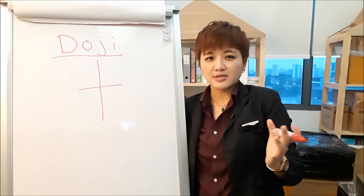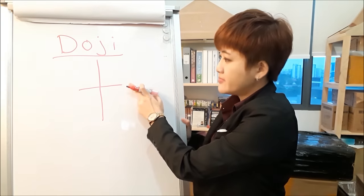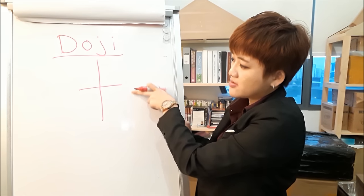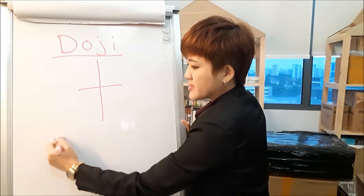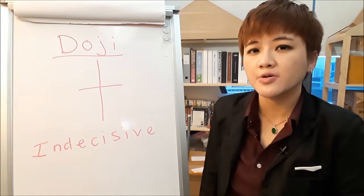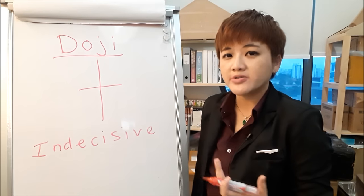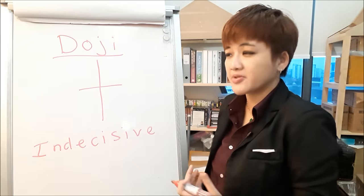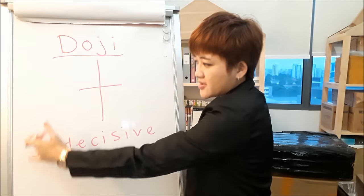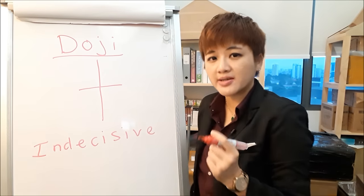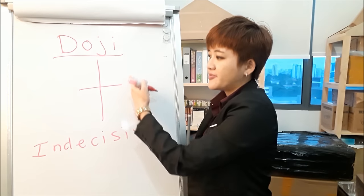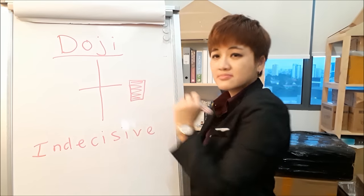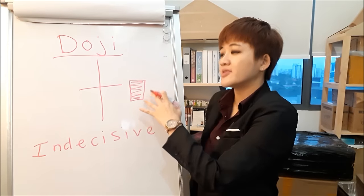The first single candlestick pattern is the doji. Price opens, goes all the way up, then all the way down, and closes back at the same level. This represents indecision — traders don't know whether to continue buying or selling. When you see this on an uptrend or downtrend, it tells you buyers and sellers are uncertain. The candle alone doesn't mean anything — you need an additional confirmation such as a bearish candle following it at the end of an uptrend.